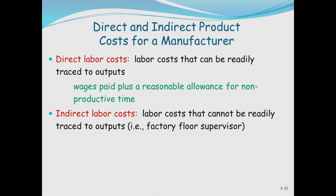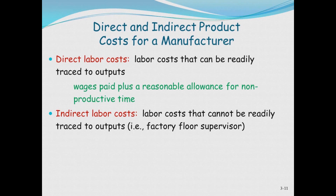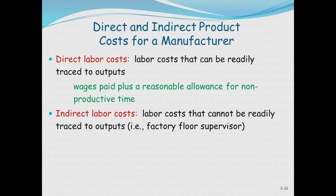Direct labor and indirect labor is its own category. Direct labor includes labor units that can be easily associated with a unit of output — the wages plus any allowance for non-productive time. Many of you will be working at accounting firms where direct labor is the major cost. A junior person is expected to be about 100% chargeable, accounting for vacation and similar time. Indirect labor would be things like a supervisor who can't be associated with an individual product but is generally associated with the factory.